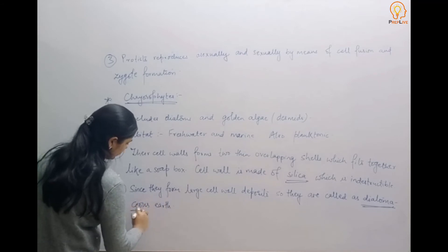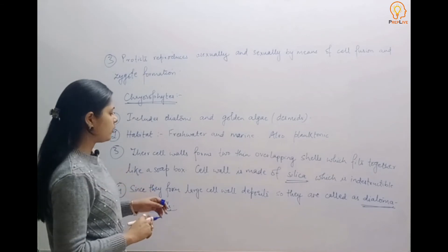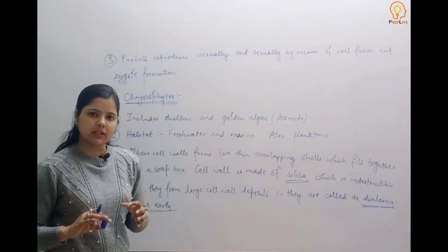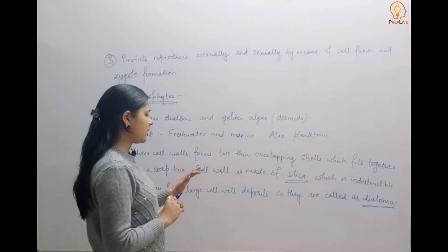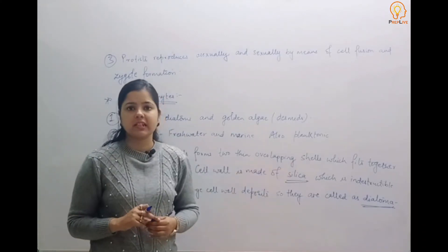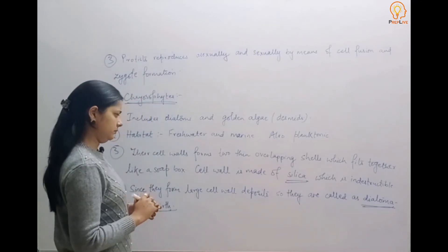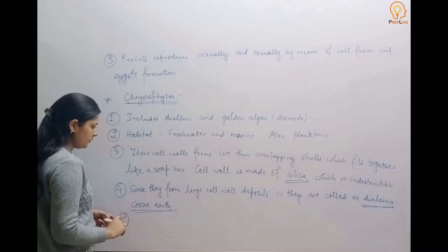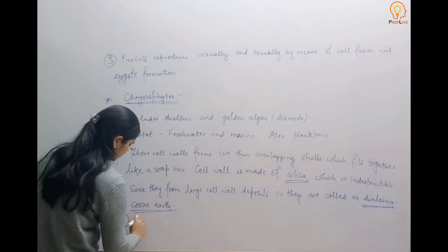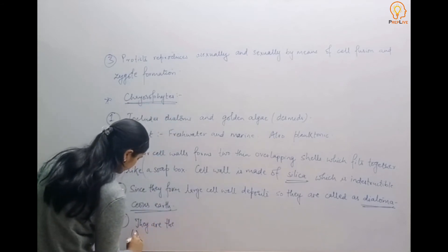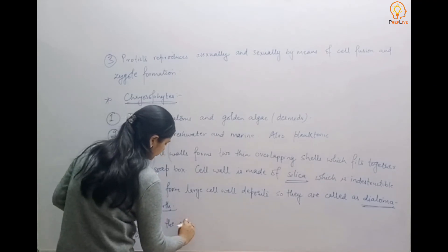The silica cell wall is indestructible. Because the cell wall is deposited inside the earth — due to the indestructible silica nature — this forms diatomaceous earth. Diatoms are also the chief producers in the oceans.